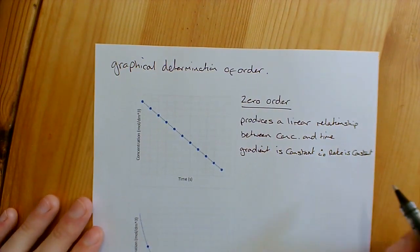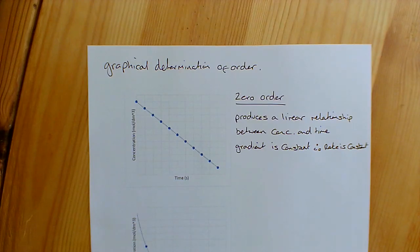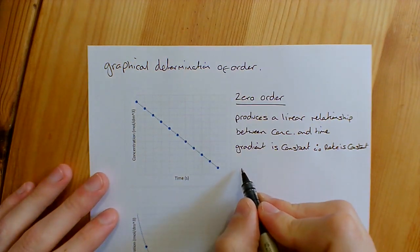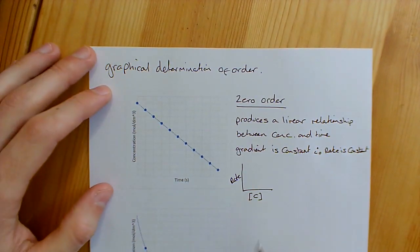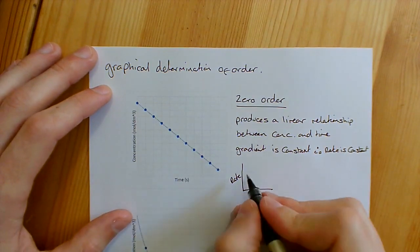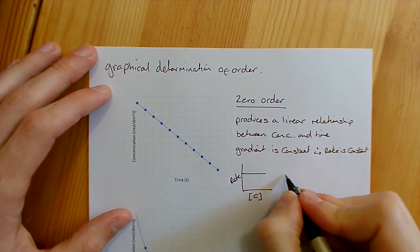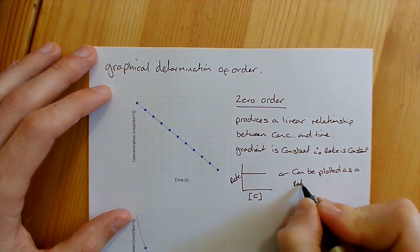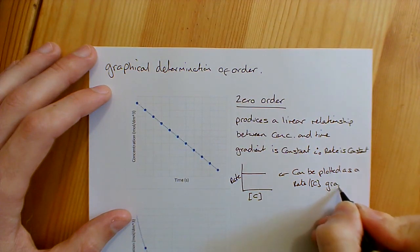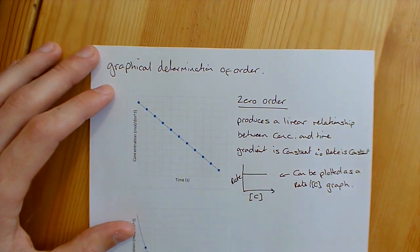We can clearly see the gradient is not changing so this is a zero order reactant. What you could also do is plot a rate-concentration graph. If you plot concentration on the x-axis and rate on the y-axis, you'll see that as concentration changes the rate stays the same — giving a completely horizontal linear relationship. This confirms it is zero order.